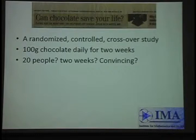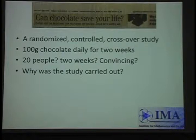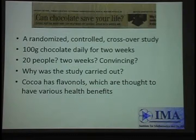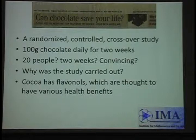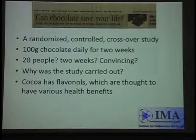They had a reason to think it might work because cocoa has something called flavonols, which are thought to have various health benefits. So there was motivation for the study. They wanted to see the impact on people with slightly high blood pressure — a very well-focused group. And because it was short, they could control many extraneous factors. Cocoa does have flavonols. But how else could we study this? What other types of things could we look at?